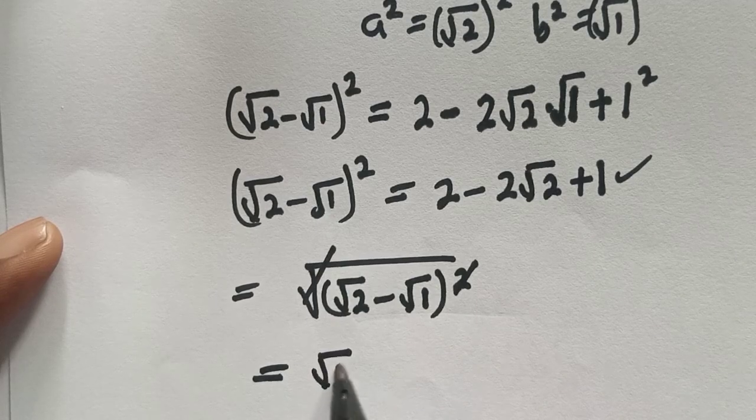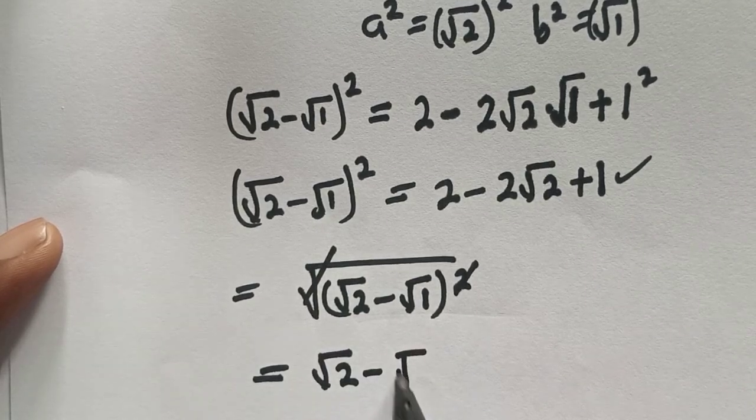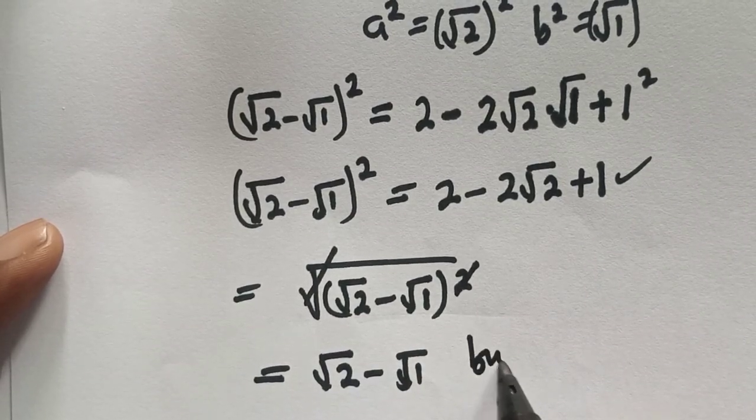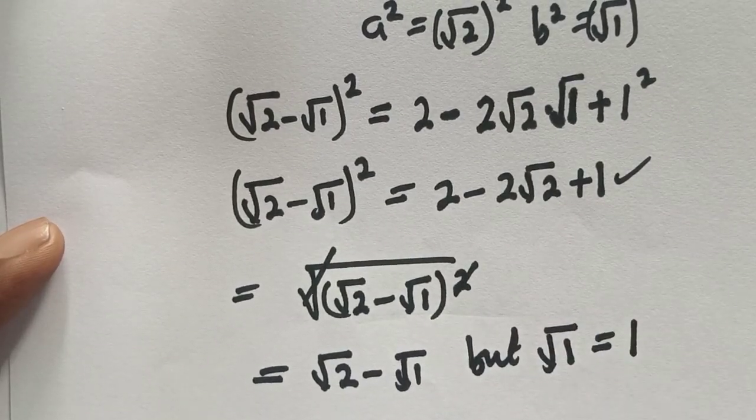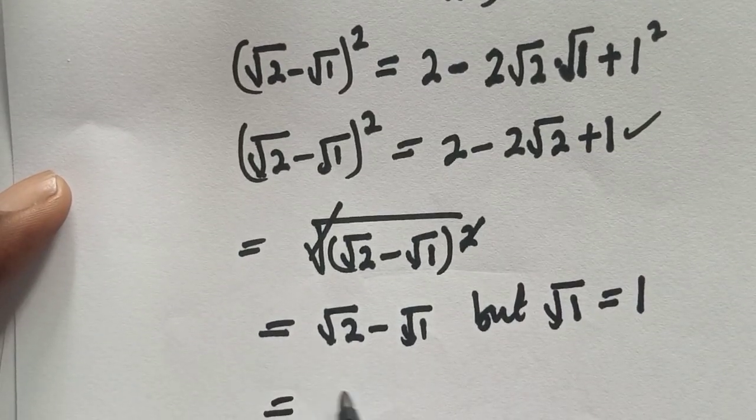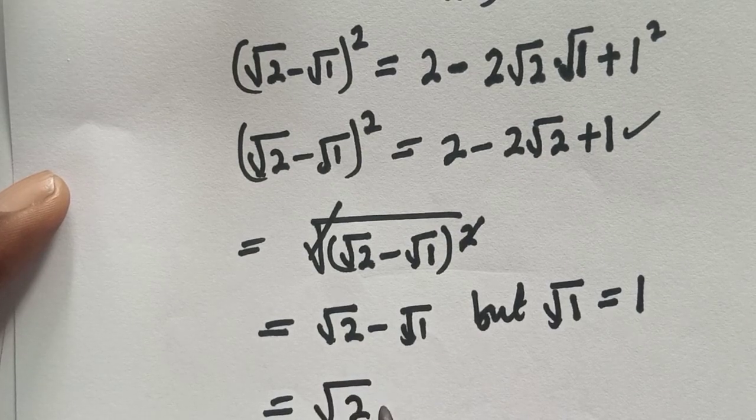This is equal to root 2 minus root 1, but root 1 is equal to 1. So this is equal to root 2 minus 1.